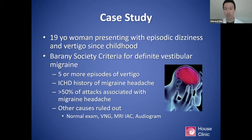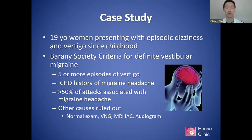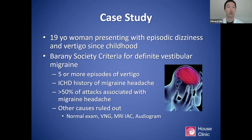For this third section, I'll start with another case study. A 19-year-old woman presenting with episodic dizziness and vertigo since childhood, meeting the Barany Society criteria for definite vestibular migraine — five or more episodes of vertigo, meeting the International Classification of Headache Disorders criteria for migraine headaches, and greater than 50% of her vertigo attacks associated with migraine headaches with other causes ruled out through testing.